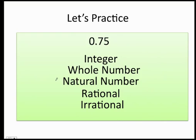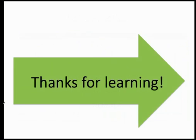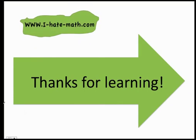0.75 — pretty easy, it's rational. The number zero — we know this is an integer. Thank you so much, and again, thanks for learning!